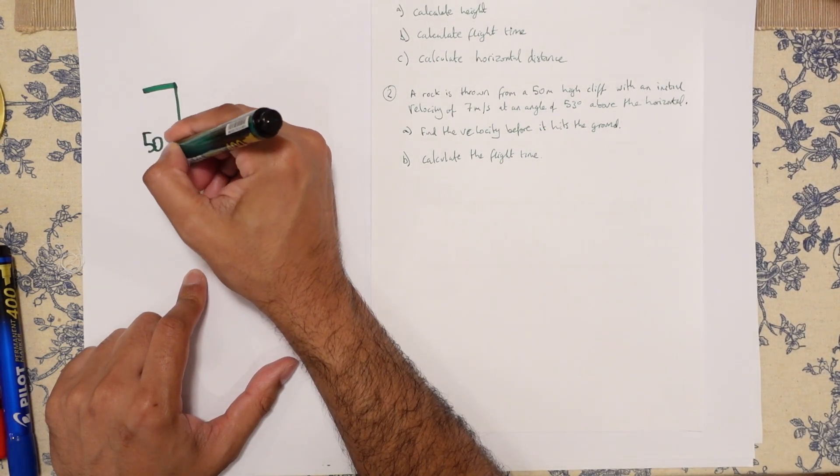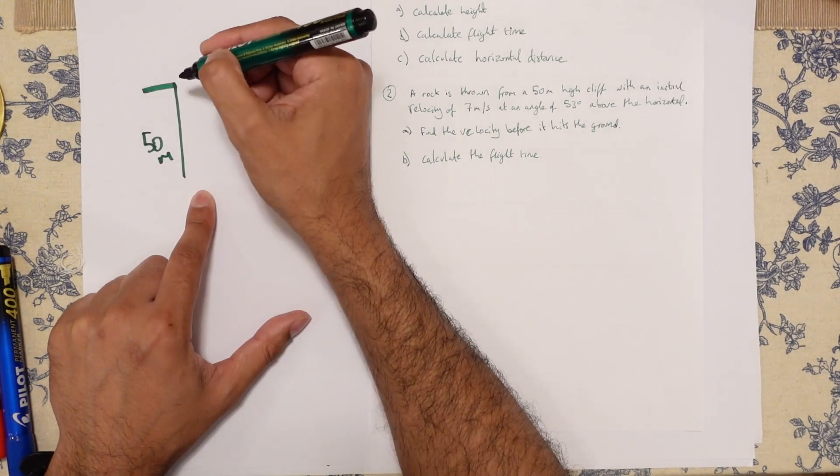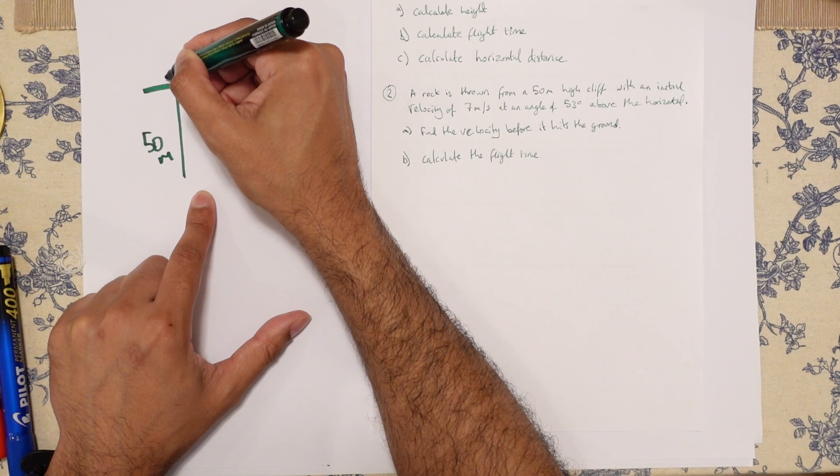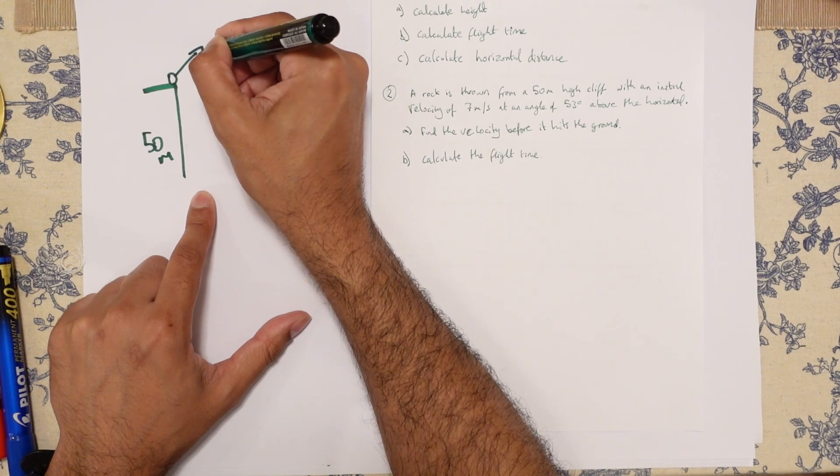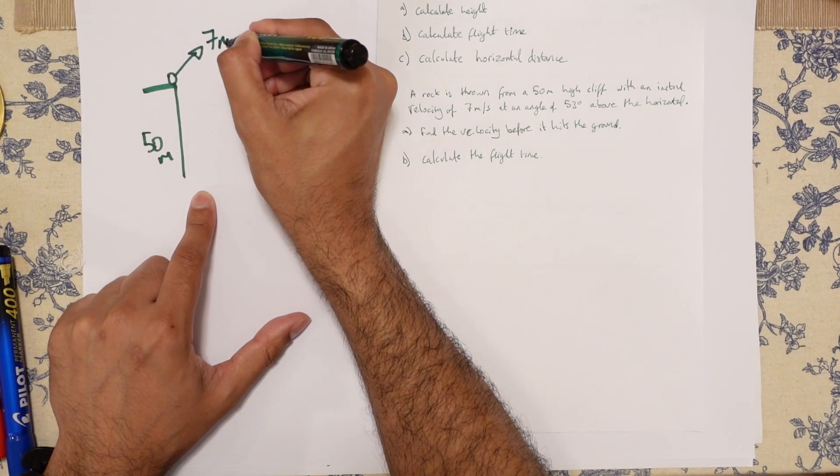This is 50 meters. This is my delta Y. And a rock is thrown. So you've got a rock over here and it's thrown like that. This is 7 meters per second. This is VI.